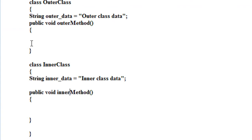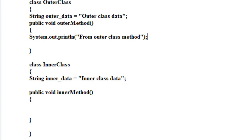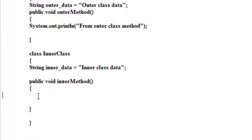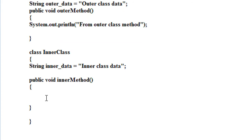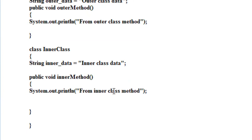Now I just print a message here from outer class. Also I display a message in the method inside the inner class, which says 'inner class method'.